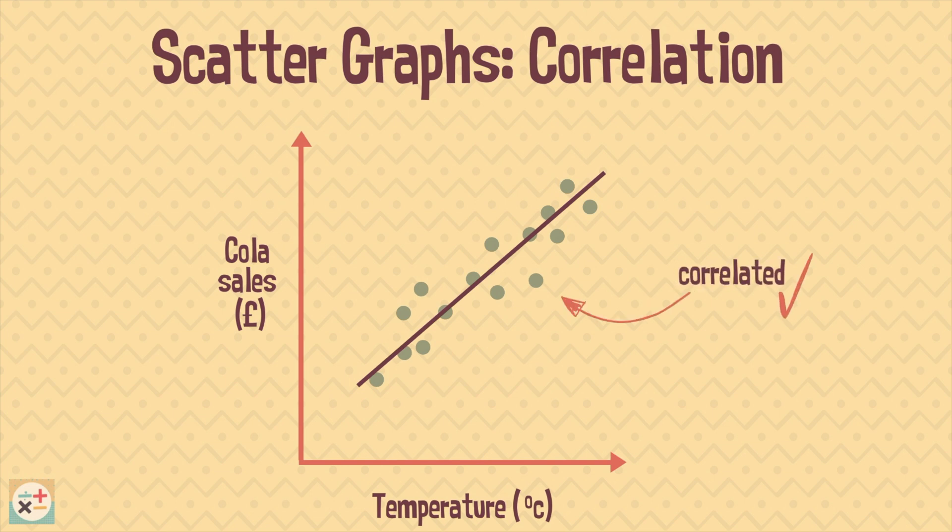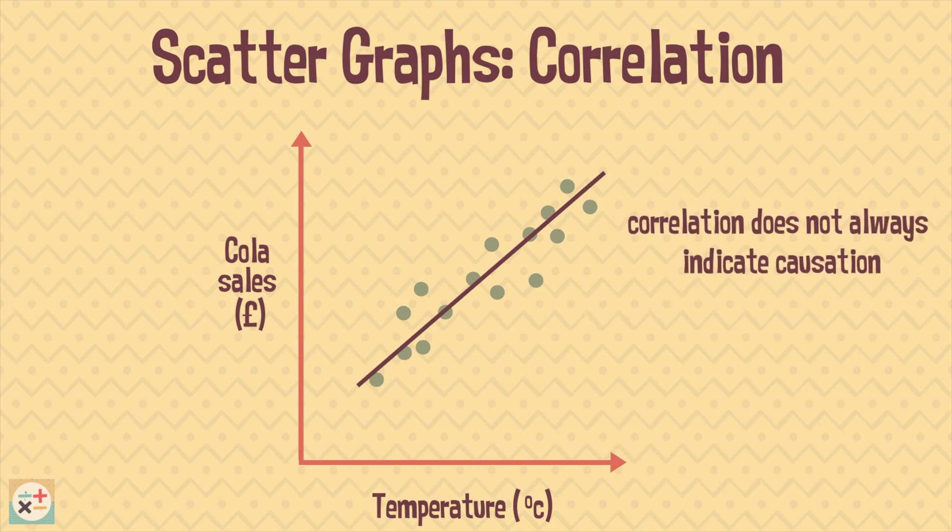However, it's important to remember that just because two things are correlated doesn't always mean that an increase or decrease in one thing has caused the increase or decrease in the other. In this example, we can't be certain that the increase in temperature has caused the increase in cola sales even though it may seem likely. There could have been a discount or offer on the price of the cola on the day the data was collected which could have been the cause for the increase in sales. Therefore, correlation does not always indicate causation so it's important to consider other factors.